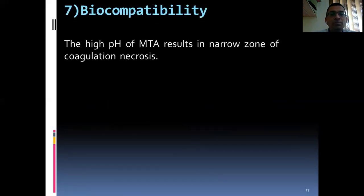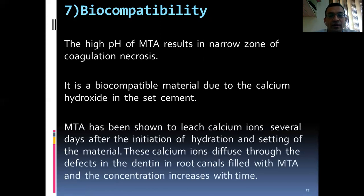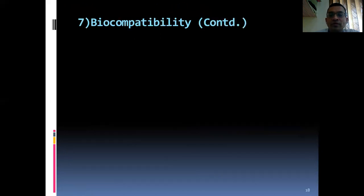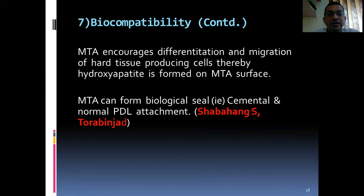Biocompatibility: the high pH of MTA results in a narrow zone of coagulation necrosis. It is a biocompatible material due to the calcium hydroxide in the set. MTA has shown to leach calcium ions several days after the initiation of hydration and setting. These calcium ions diffuse through the defects in the dentin in root canals filled with MTA and the concentration increases with time. MTA encourages differentiation and migration of hard tissue-producing cells, thereby hydroxyapatite is formed on the MTA surface. MTA can form biological cementum and normal periodontal attachments, according to Shabang and Torabinejad.